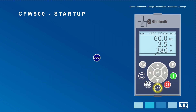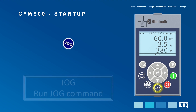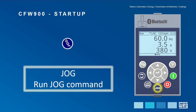The JOG function is used for machinery startup procedures, maintenance, or manual position control. If enabled, when pressed, the motor spins at a low speed condition so the user can check the machine's operation and go through the aforementioned situations.